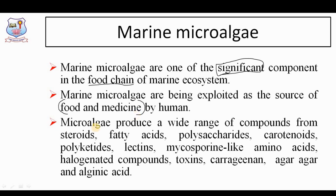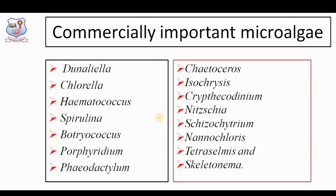Marine microalgae are focused by human beings because of their role in food as well as in medicine industries. They produce a variety of compounds ranging from steroids, fatty acids, and polysaccharides, which is why they attract researchers to do active research in this thrust area. Examples of commercially important microalgae include Dunaliella, Chlorella, Haematococcus, Spirulina, Skeletonema, Tetraselmes, and Nanochloris. These are the most familiar algae in the industry because of their uniqueness.